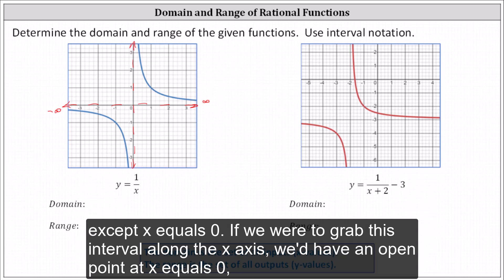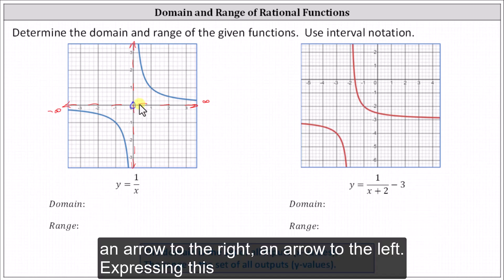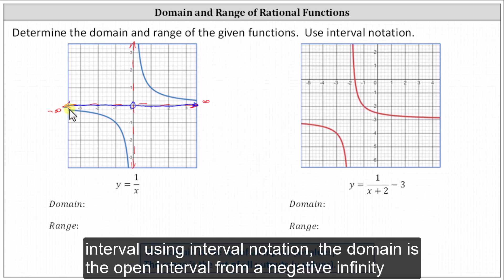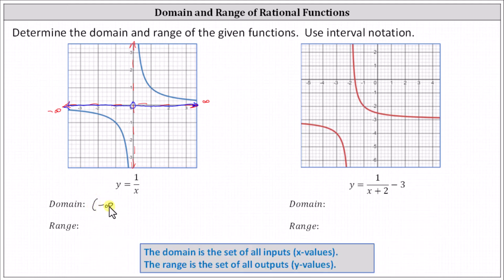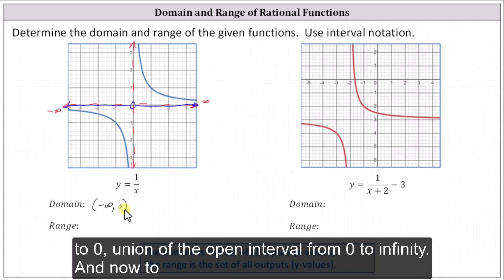If we were to graph this interval on the x-axis, we'd have an open point at x equals zero, an arrow to the right, and an arrow to the left. Expressing this using interval notation, the domain is the open interval from negative infinity to zero, union the open interval from zero to infinity.